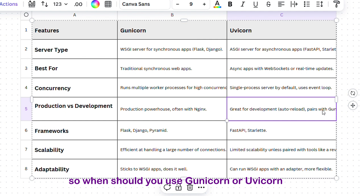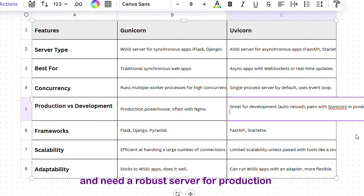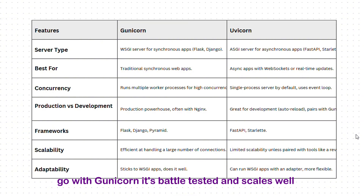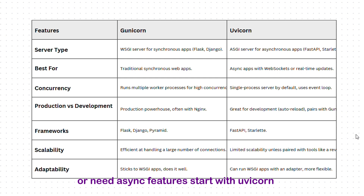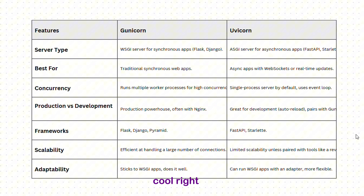So, when should you use Gunicorn or Uvicorn? If you're building a Flask or Django app and need a robust server for production, go with Gunicorn — it's battle-tested and scales well. If you're working on a FastAPI project or need async features, start with Uvicorn, especially for development. In production, you might even combine them, using Uvicorn for the async app and Gunicorn to manage workers.